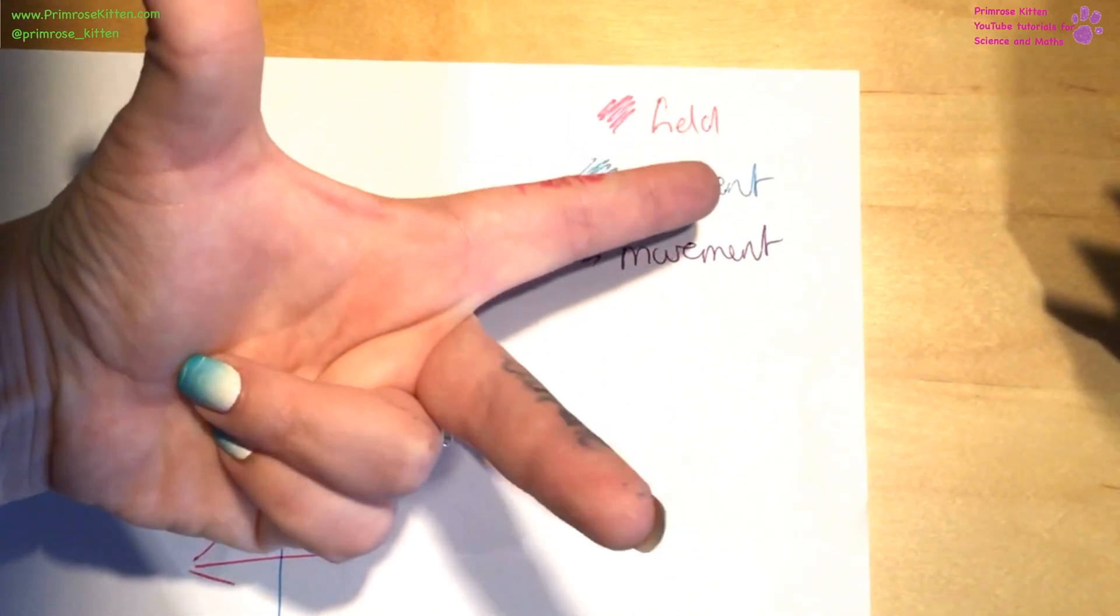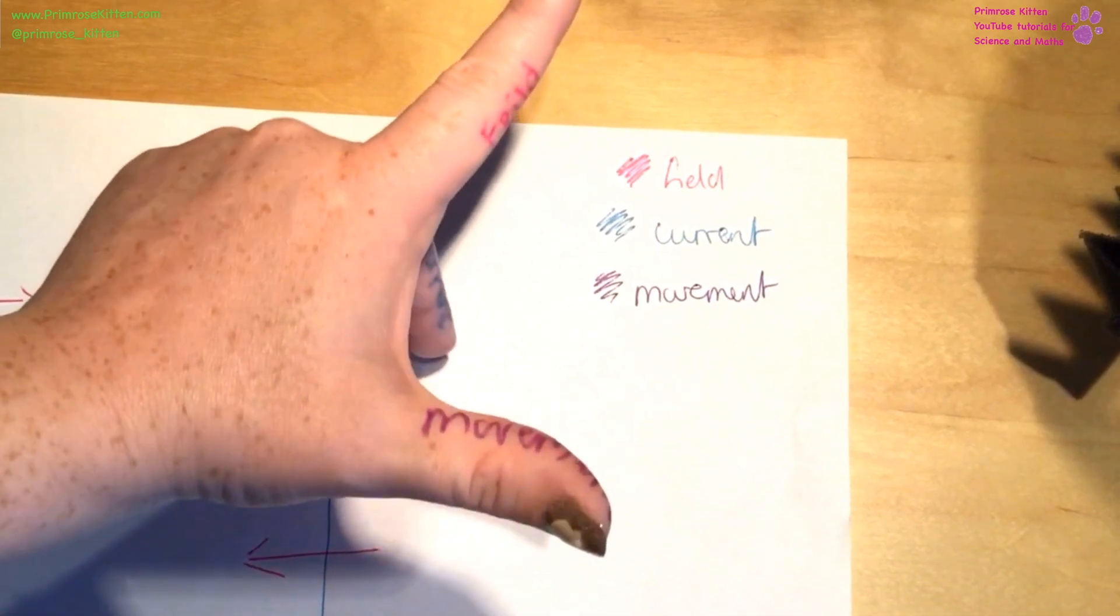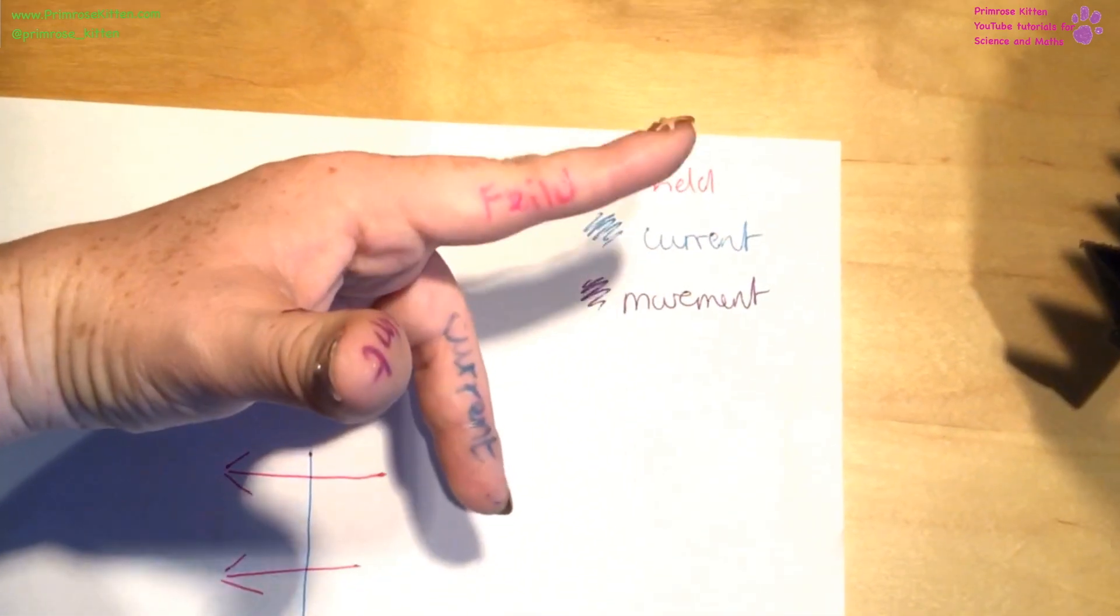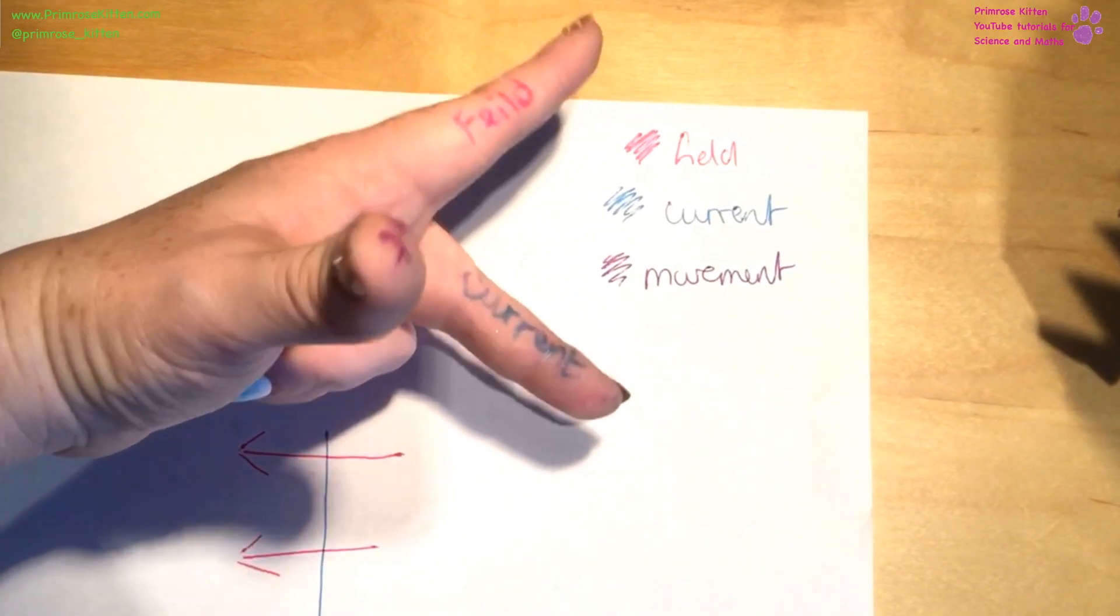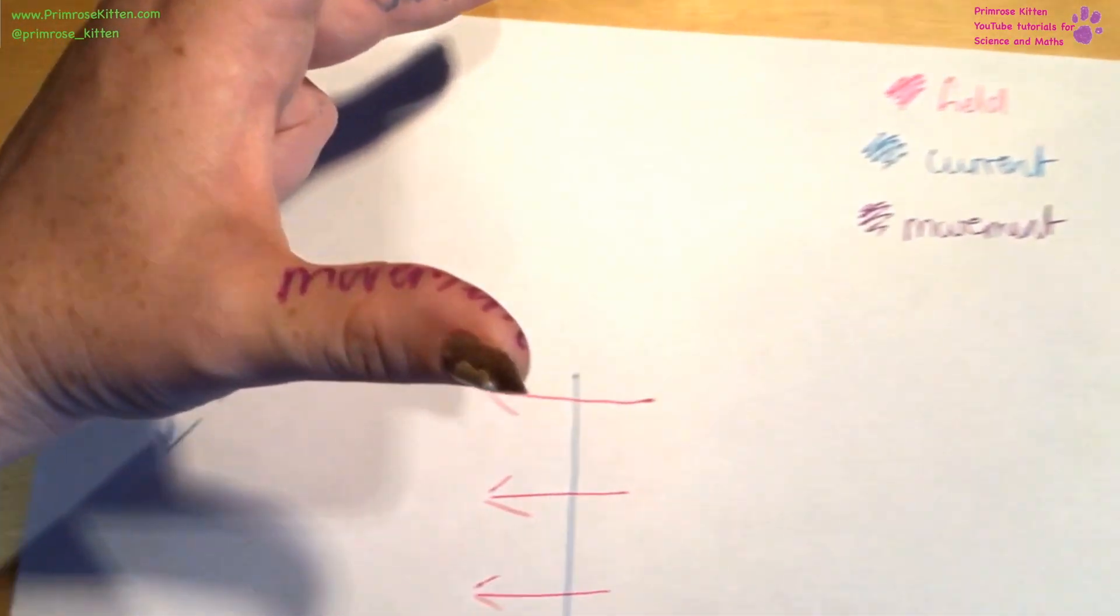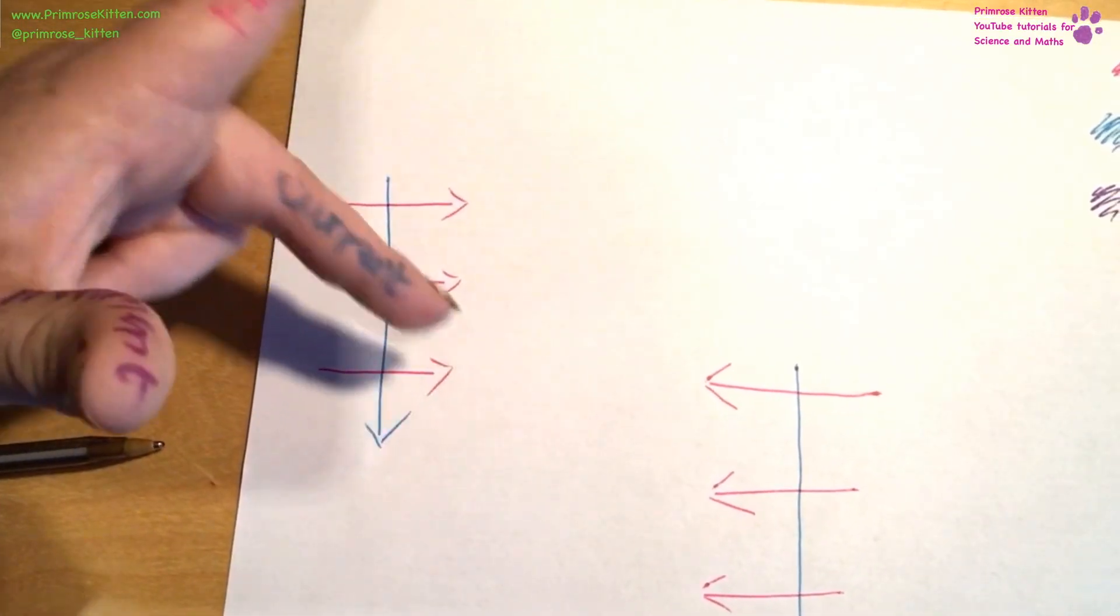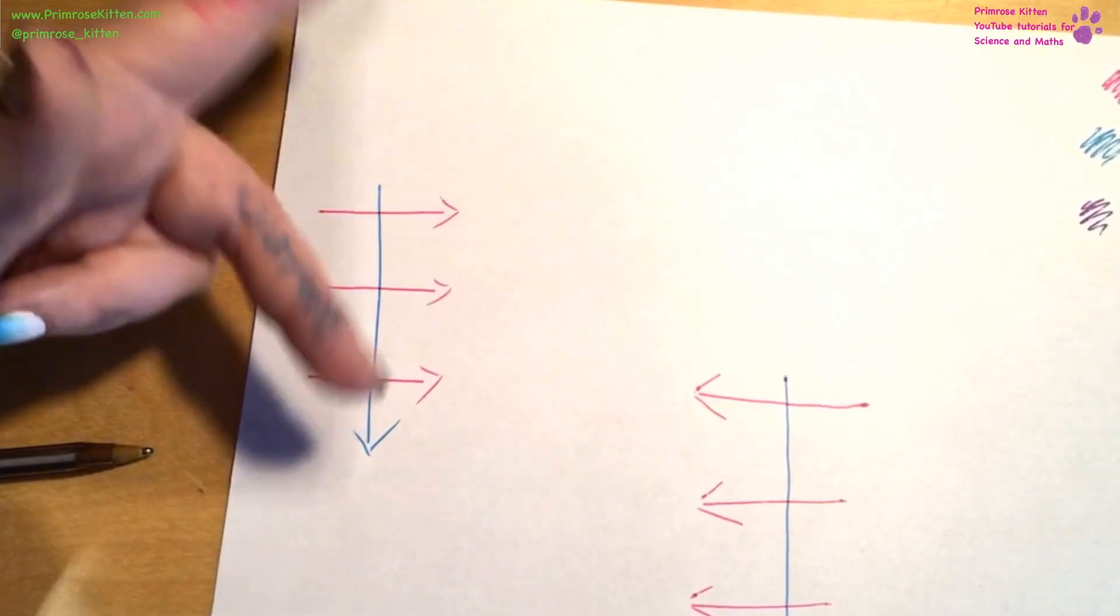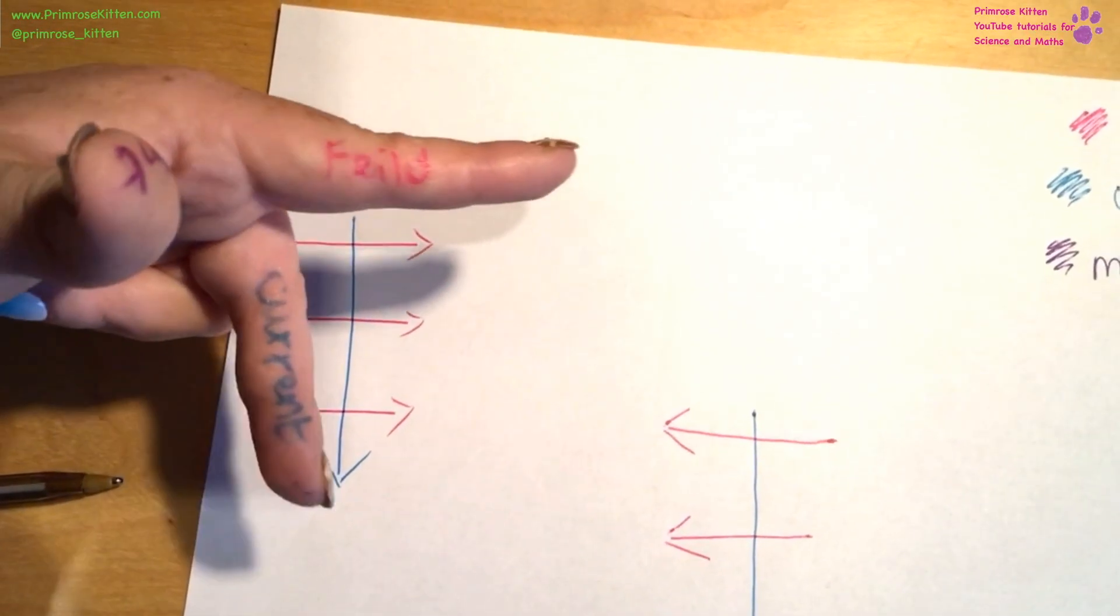For Fleming's left-hand rule, we need to make our left hand in this shape here. So finger pointing out, thumb up, finger out. Your first finger is your magnetic field. This thing here is the current, and then your thumb is the movement of the force. And what you need to do when you have an exam question is literally contort your hands until it fits in the right direction.